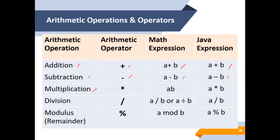For multiplication, we use the star sign. For the math expression, we can write directly AB, but for the Java expression, we have to use A star B.